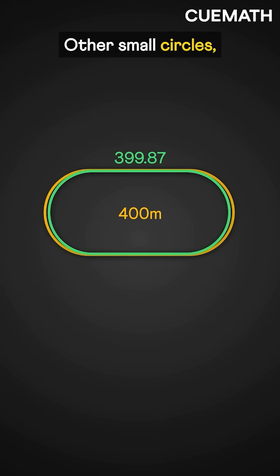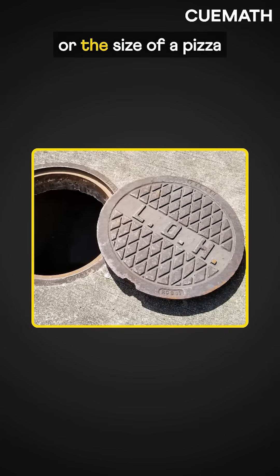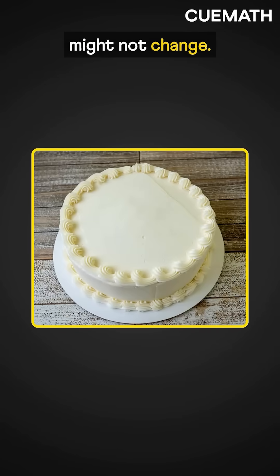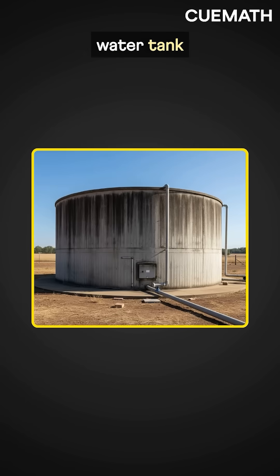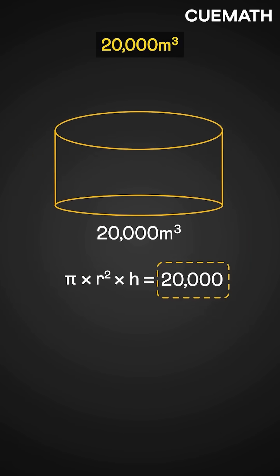Other small circles, like a manhole cover or the size of a pizza or cake, might not change. But what about bigger ones, like a cylindrical water tank with a capacity of 20,000 cubic meters and a height of 10 meters?